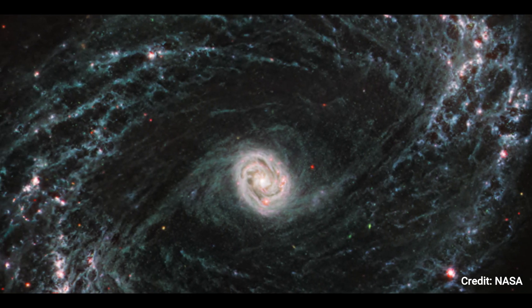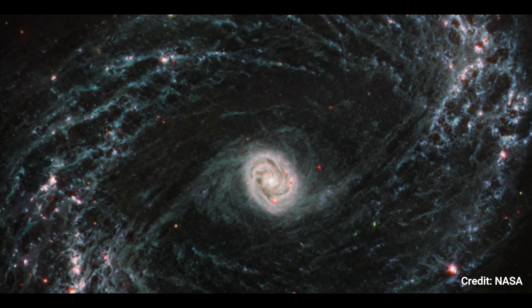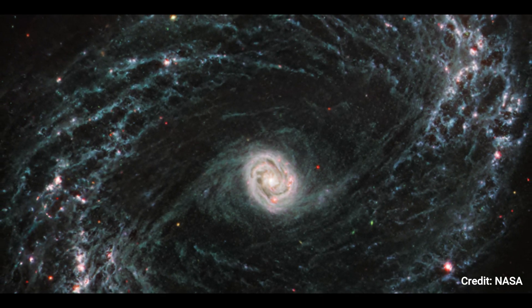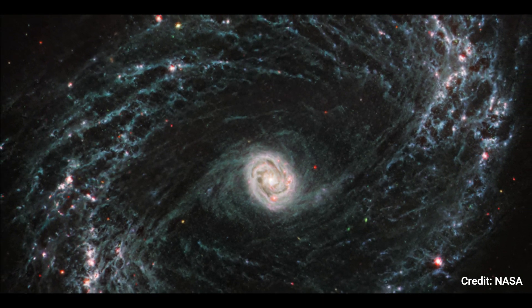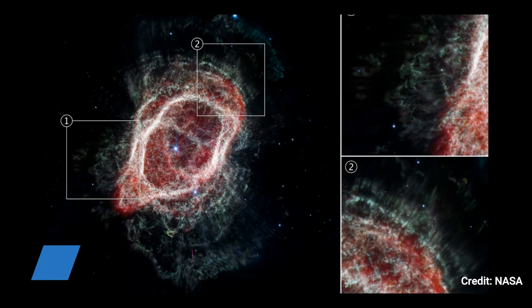A scale bar labeled 7000 light years, 30 arc seconds, is located on the lower right. The scale bar's length is around one-fifth the image's whole width. A color key is provided below the image, indicating which MIRI filters were used to construct the image and which visible light color is allocated to each filter.